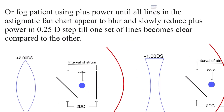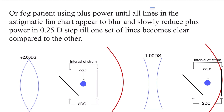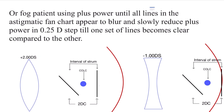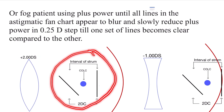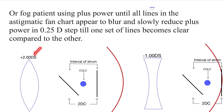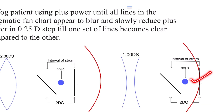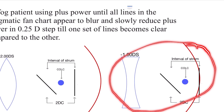There is an alternative method where you add plus power until all the lines on the chart become blurred, and then decrease the plus power until one of the lines becomes clear compared to the others. In this example, using +2 diopters sphere brings the whole interval of Sturm in front of the retina, and then slowly reducing the plus power causes one focal point to coincide with the retina. Both of these methods give the same result.